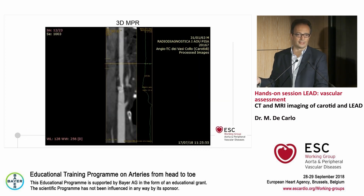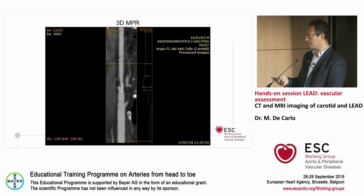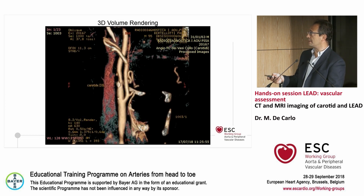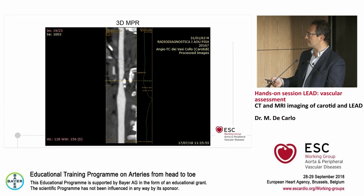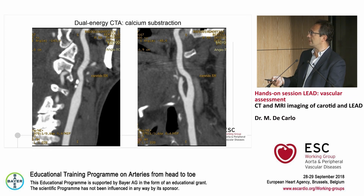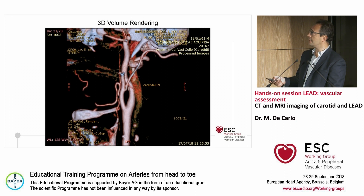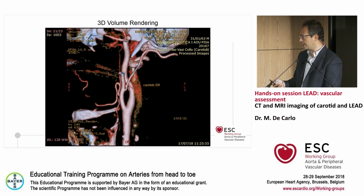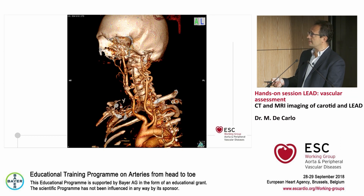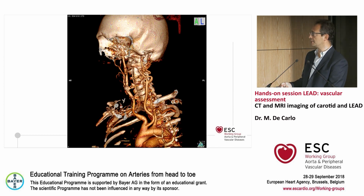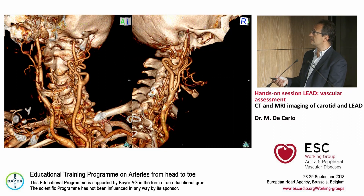If you have a radiologist available, please ask if it is possible to have this kind of post-processing. The volume rendering, again, does not provide much information. For example, this patient has a bovine arch — if you go for carotid stenting without knowing that the patient has a bovine arch, it can be tricky and take a lot of time.